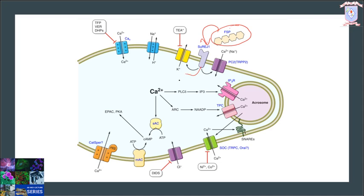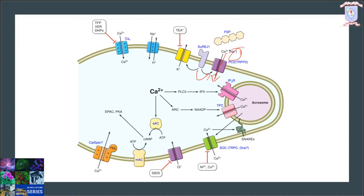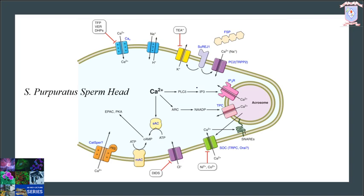The receptor activates three sperm membrane proteins. The first is a calcium transport channel that allows calcium to enter the sperm cytoplasm. The second is a sodium-hydrogen exchanger that pumps sodium ions into the sperm as it pumps hydrogen ions outside. The third is a phospholipase enzyme — phospholipase C delta — that makes another second messenger, inositol triphosphate, IP3, in S. purpuratus.